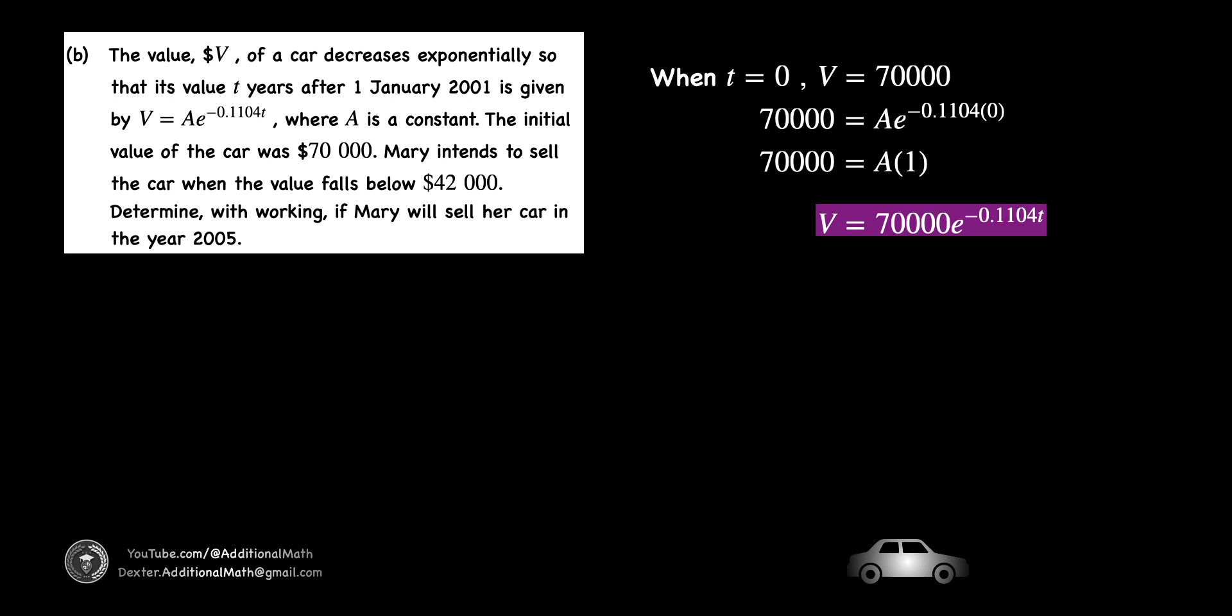For the next part of the question, we can begin by replacing t to be 0 and v to be 70,000 as the initial value of the car was $70,000. Thus, constant a will be equal to 70,000. From here on, we will use only this equation when v equals 70,000 multiplied by e to the power of negative 0.1104t.